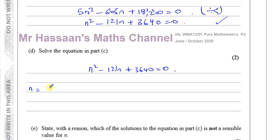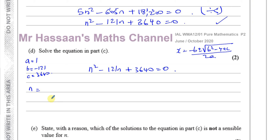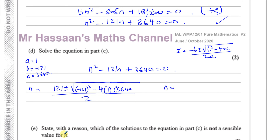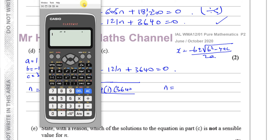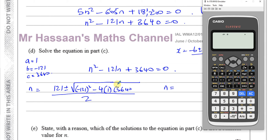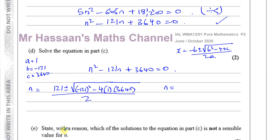Using the quadratic formula: N equals minus B plus or minus the square root of B squared minus 4AC, all over 2A. Here A is 1, B is minus 121, and C is 3640. So N equals 121 plus or minus the square root of 121 squared minus 4 times 1 times 3640, all over 2. Writing this out is enough to get the method marks for this question.